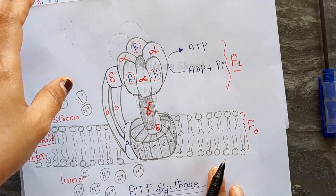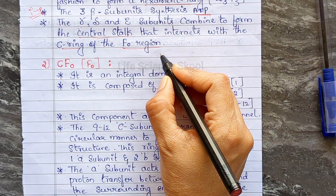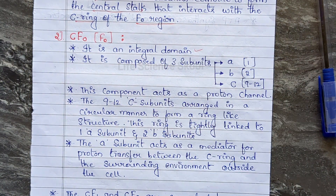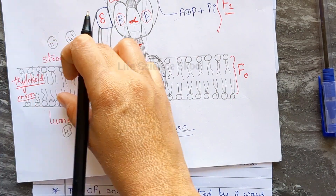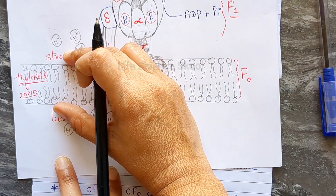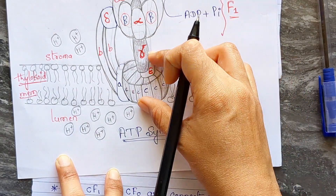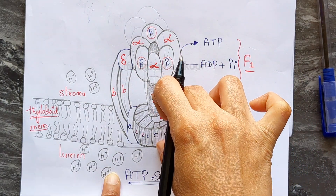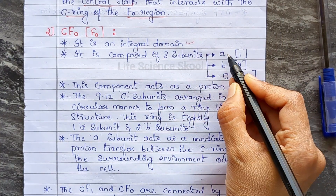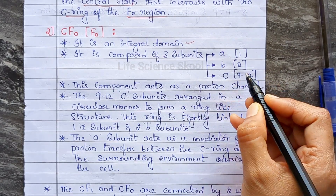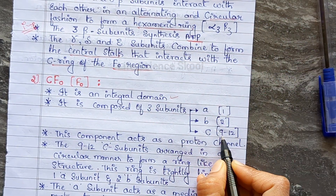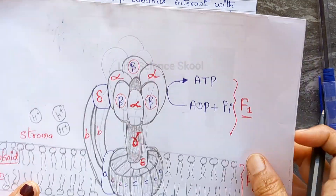F-naught is an integral domain because it is embedded in the membrane — the thylakoid membrane. Being embedded in the membrane makes it an integral domain, while CF1 outside is the peripheral domain. F-naught is composed of three subunits: a (one copy), b (two copies), and c (approximately 9 to 12 copies, varying between different ATP synthases).